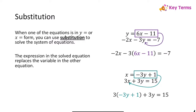In the second system, you can see an equation that's solved for x. So you take negative 3y plus 1 and substitute it into the second equation in place of x. That gives you an equation with only one variable, y, and then you can solve for y.